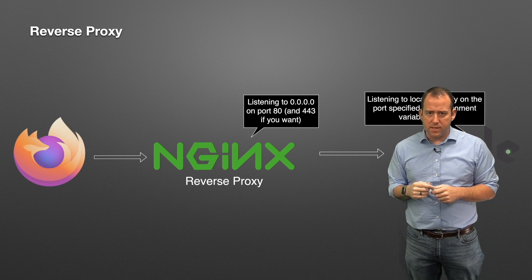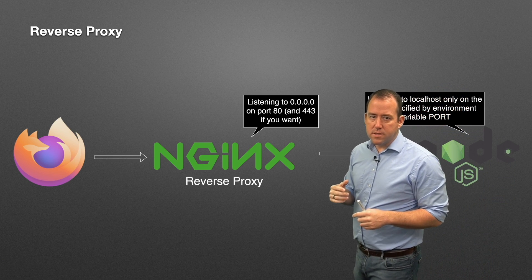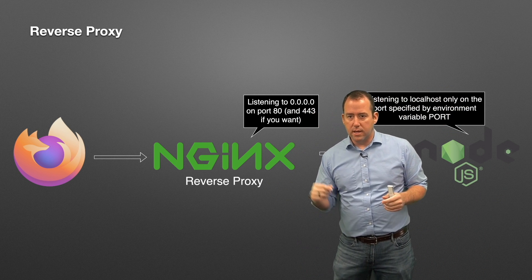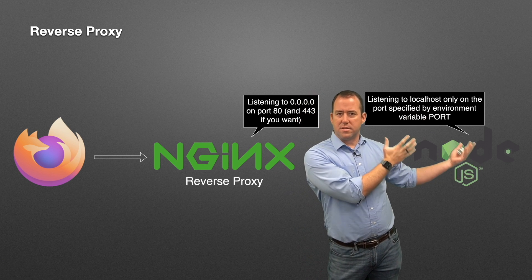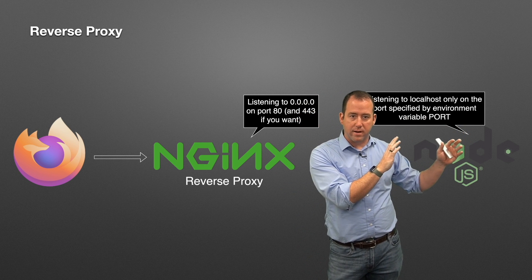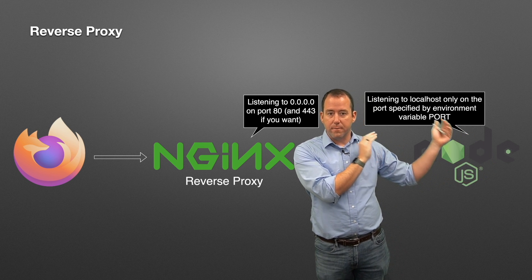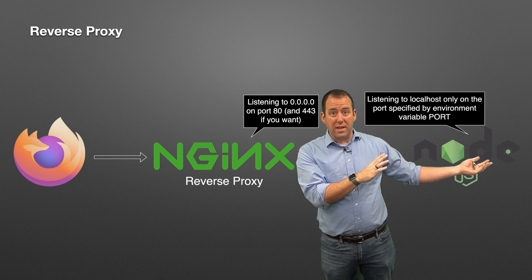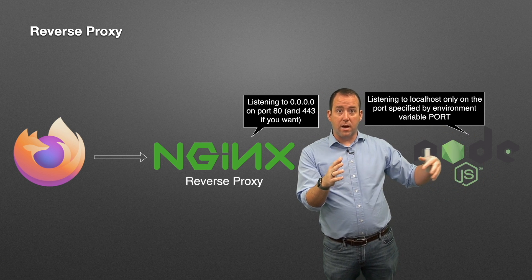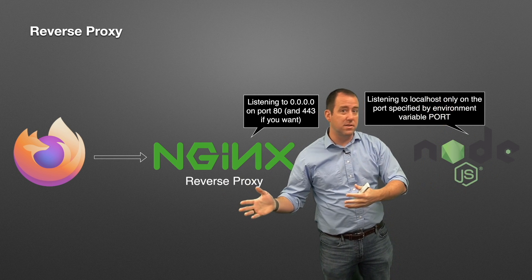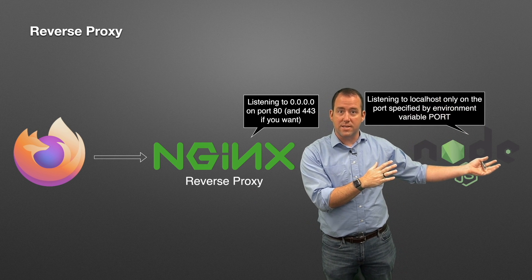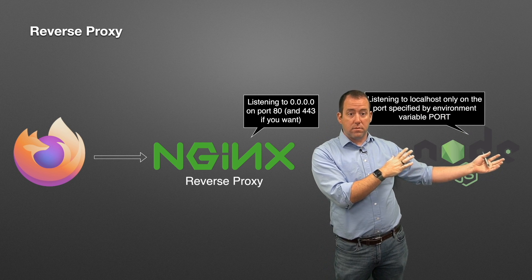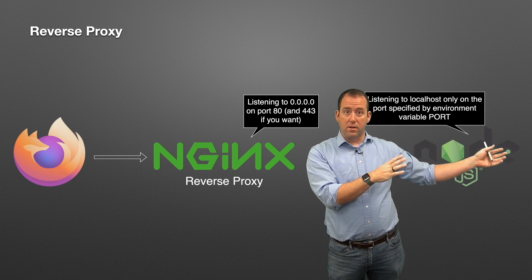When you set up an application in Elastic Beanstalk, it creates what's called a reverse proxy. You deploy your code — whether Node.js, Python, .NET, it doesn't matter — and it runs very much like it does in your local environment, listening on some port, like port 3000, or whatever port is specified by the Elastic Beanstalk configuration. That code is listening for traffic on localhost.